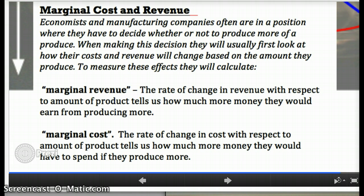Economists and manufacturing companies are often in a position where they have to decide whether or not to produce more of a product. When making this decision, usually they want to know before they make more of whatever they're making that it's not going to hurt their business. So they look at how producing more will change their costs and their revenue. And cost is the amount of money they have to spend in order to create something, and revenue is the amount of money they will get back after selling what they create. So they're looking at how costs and revenue change with respect to the amount they're producing. So we're no longer using time as our independent variable. Now the independent variable is the number of things that we're making or the amount of product.